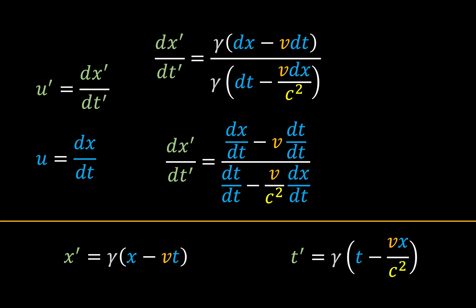Now we recognize that dx by dt is equal to u, and dt over dt is just 1, so we arrive at this expression for u'.